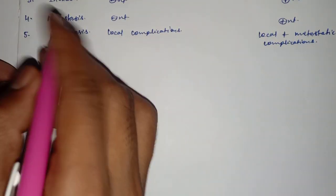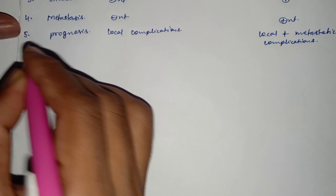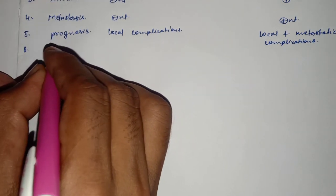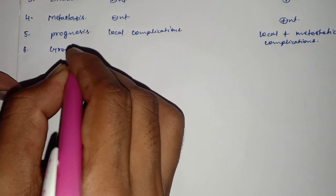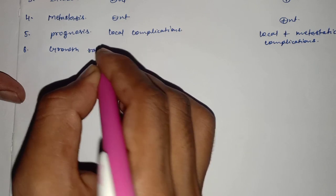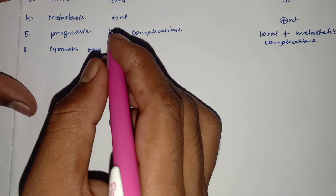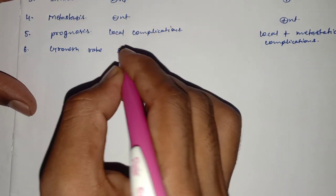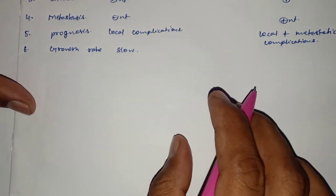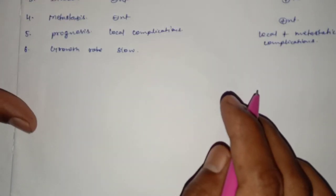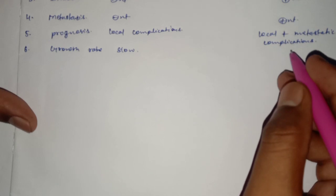The next criteria is the growth rate. The growth rate of the benign tumour is slow, and of the malignant tumour it is very high.